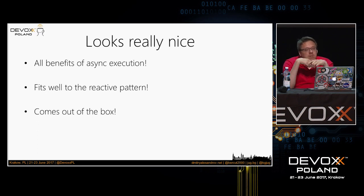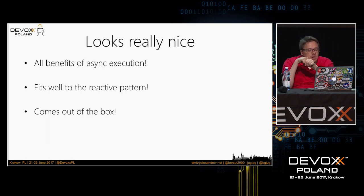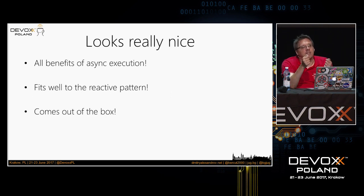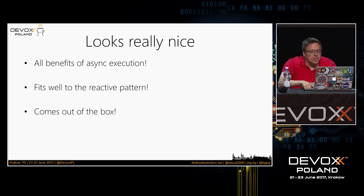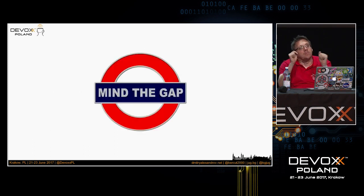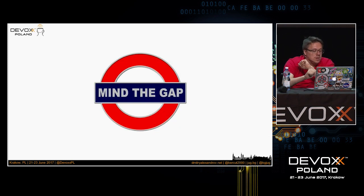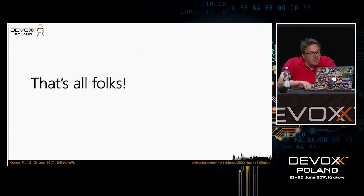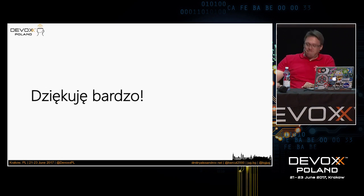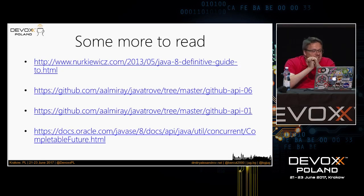What's good about CompletableFuture is that it comes out of the box — you don't have to use different libraries. Because if it comes with the JDK, it is tested, it works well, it's proven. So Java 8 is one of these things — handle it with care. And once again, mind the gap: in a synchronous application you may have it; in an asynchronous one, you can do without it. That's all from my side. Thank you very much.